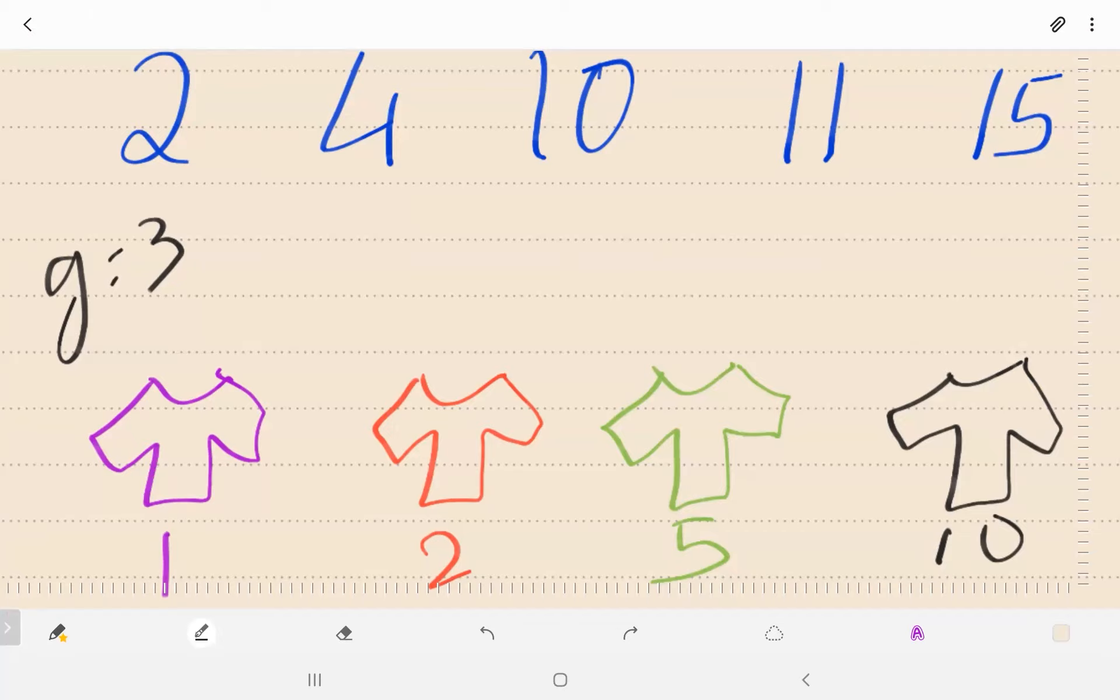Let's assume 2, 4, 10, 11 and 15 are the times in which it rains. We've got 4 shirts and g equals 3 meaning we can go out and collect the shirts a total of 3 times.